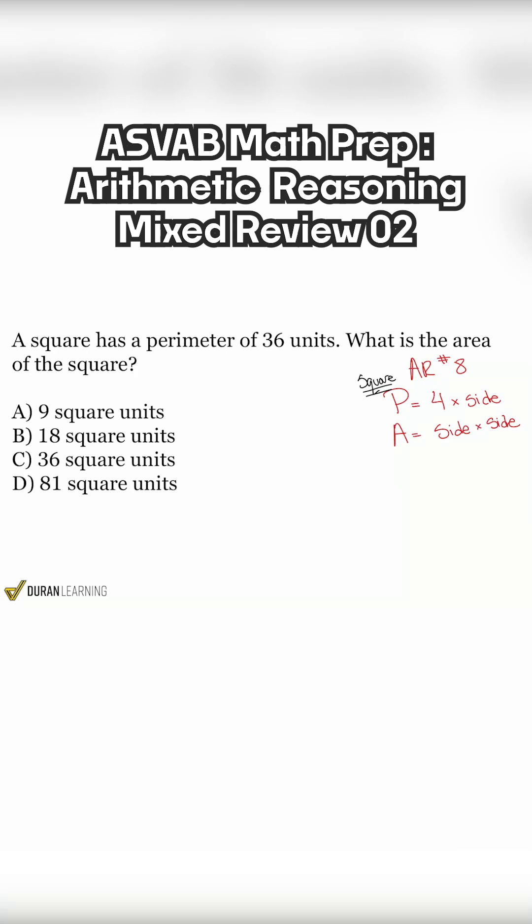All right, so let's go ahead and take care of this following question here, where what we need to know is that this is going to be from arithmetic reasoning unit number eight, and this has to do with area and perimeter. So just as a reminder, you will not be getting the formulas on the ASVAB.